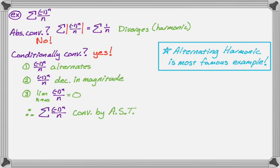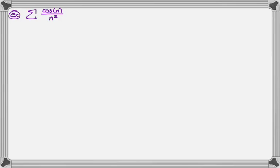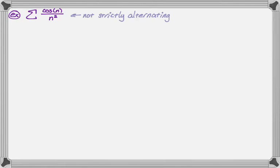Let's do one more example. We have the sum of cosine of n over n squared. The issue with this is that because n is going to be an integer, you're doing cosine of one, cosine of two, cosine of three — this thing isn't strictly alternating. So we can't actually use the alternating series test on it. We're going to check for absolute convergence and hope that that actually works.